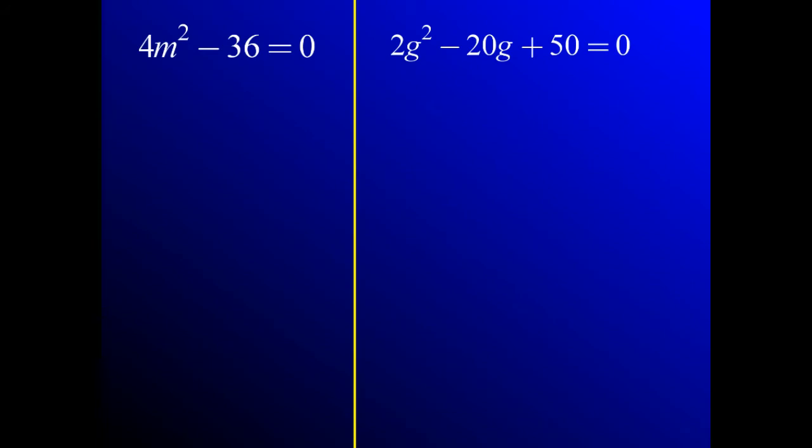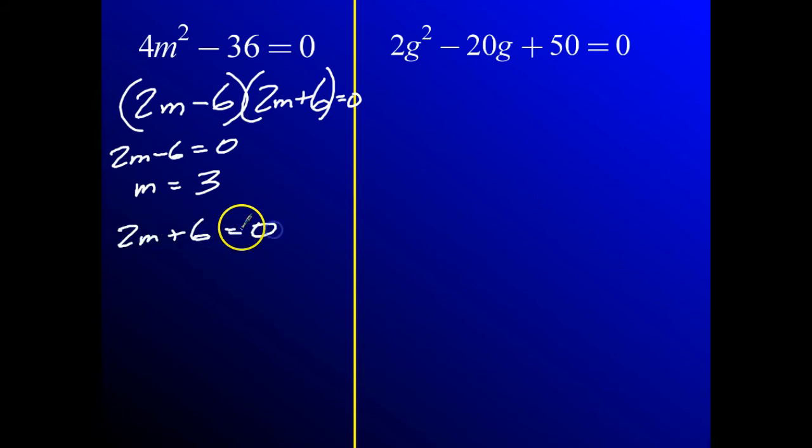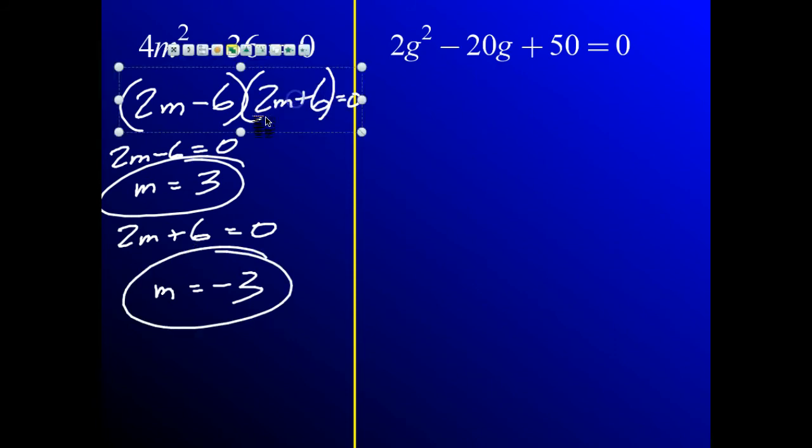Why don't you go ahead and try doing these two. Hopefully you saw this one, you saw 4m squared, that's a perfect square, 36 is a perfect square. So what I'm going to do here is say 4m squared is 2m, and that's going to be minus 6, and then I'll do 2m plus 6, and those are both equal to 0. So I've got 2m minus 6 equals 0, so m equals 3, and then I also have 2m plus 6 equals 0, so m equals negative 3.